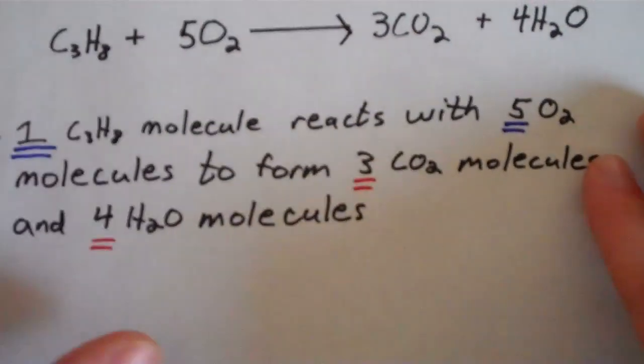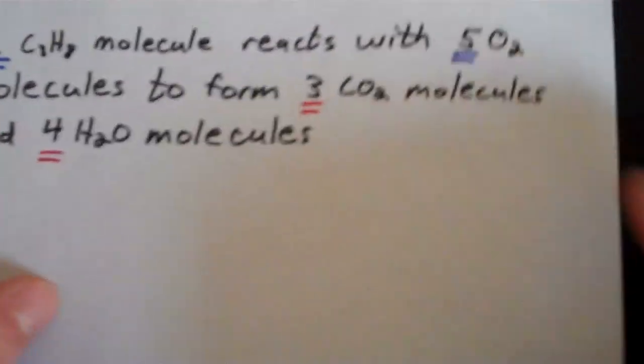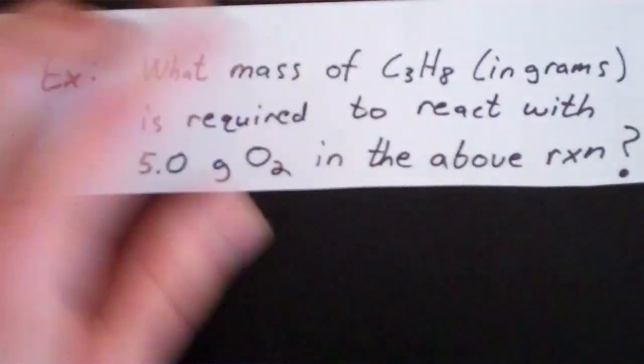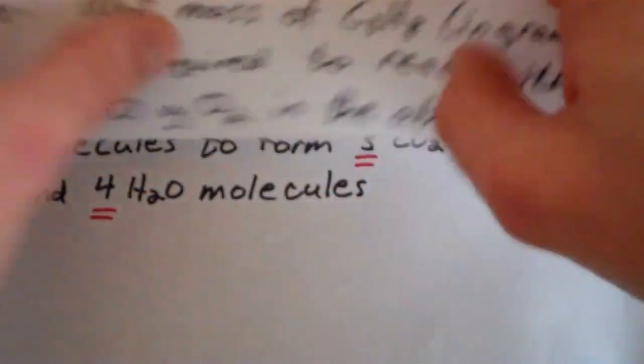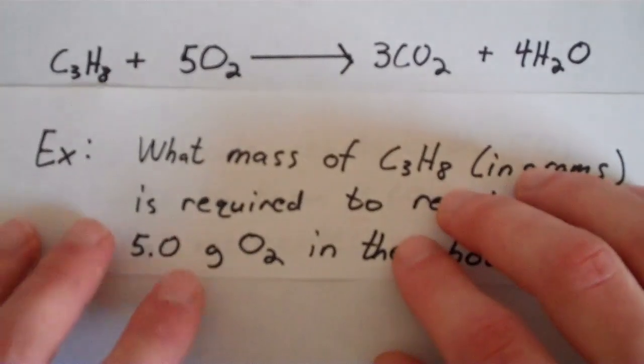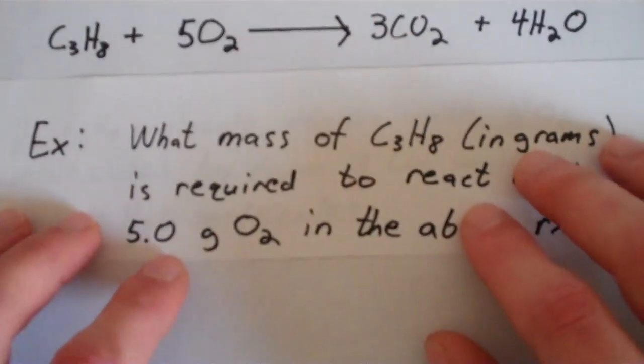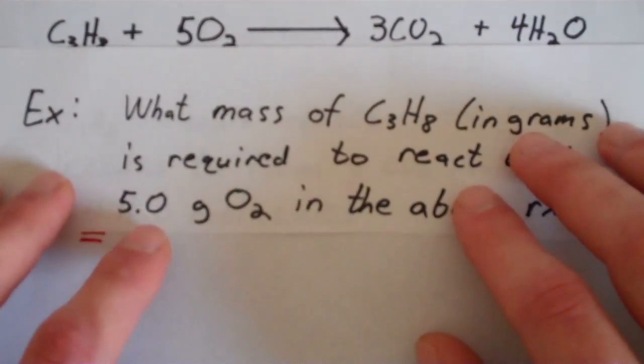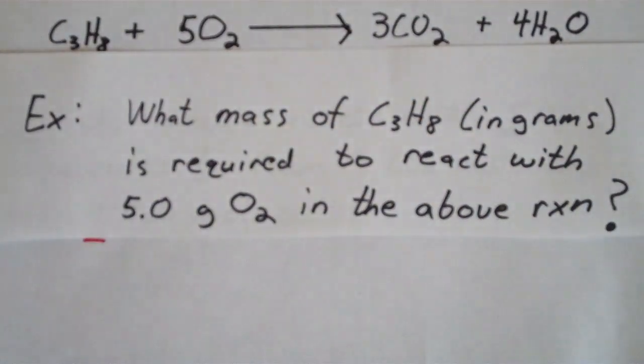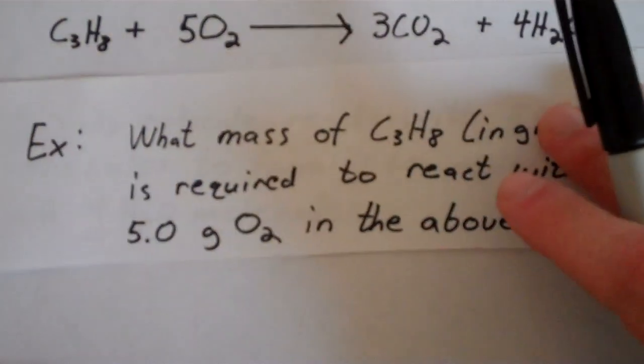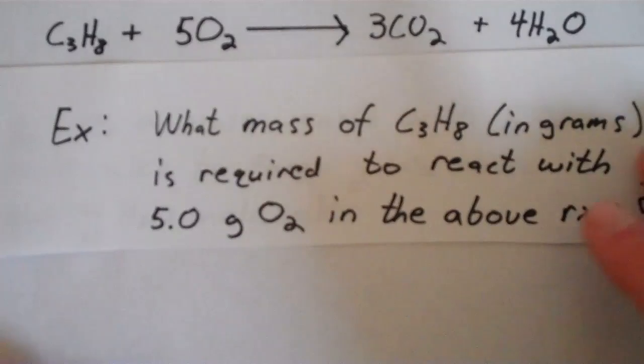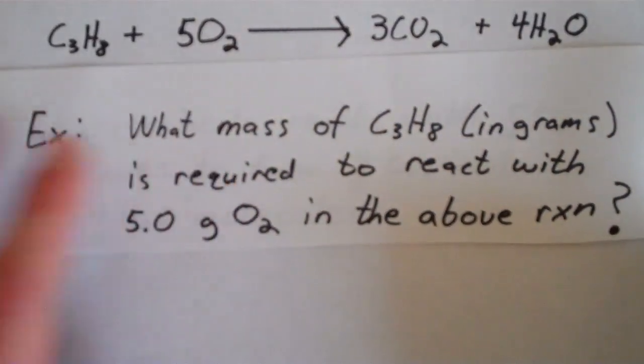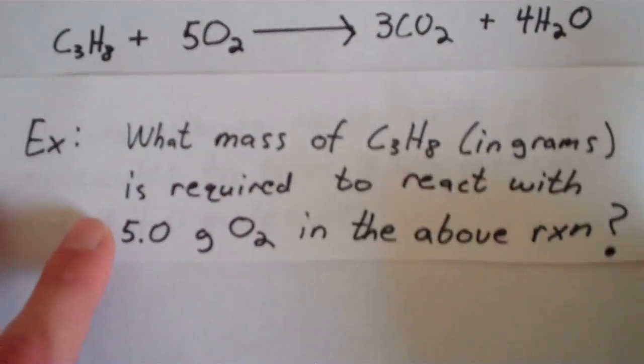So I've chosen a problem. It's going to be sort of an introductory problem to maybe get this started, so you can see how this all works. My equation back up here. So this problem says, What mass of propane in grams is required to react with 5.0 grams of O2 in the above reaction?